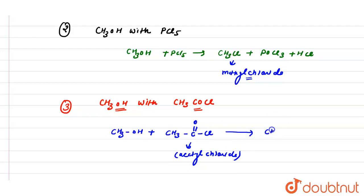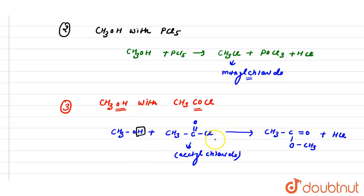The reaction is: CH₃OH + CH₃COCl → CH₃COOCH₃ + HCl. The hydrogen of the methanol is replaced by the acyl group (RCO), and an ester is formed. This product is known as methyl acetate.